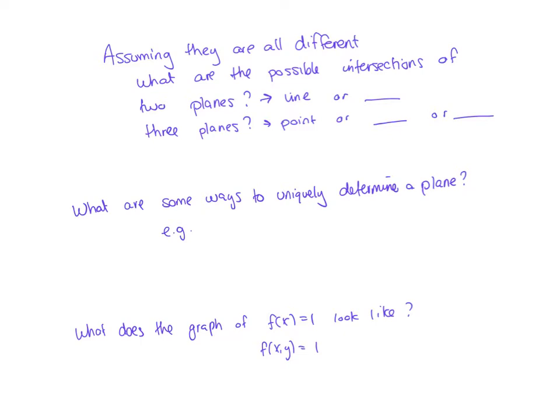If I have two different planes in space, maybe those planes are just parallel to each other so they never intersect, or if they do intersect, they're going to run right into each other and intersect in some line. So if I have two planes, either they intersect in a line or there's no intersection. The only way they can have no intersection is if they're parallel, meaning they have parallel normal vectors or their normal vectors are scalar multiples of each other.